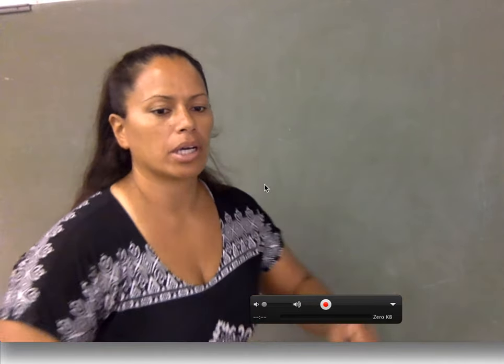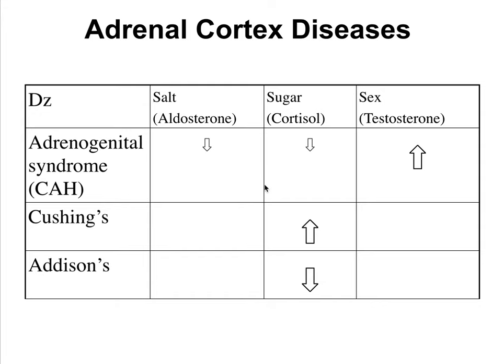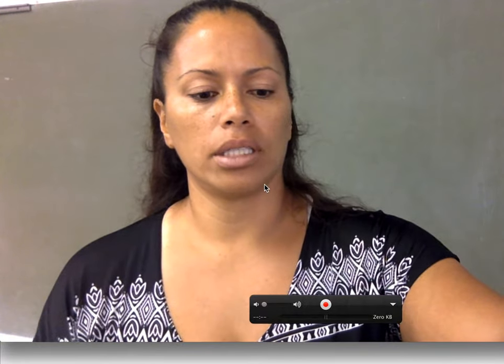We're going to do a couple of diseases for the adrenal cortex. Adrenal cortex diseases include: Cushing's - a little bit too much cushion for the pushing - and Addison's - we need to add a little something. Let's get started on a review of the pathway.